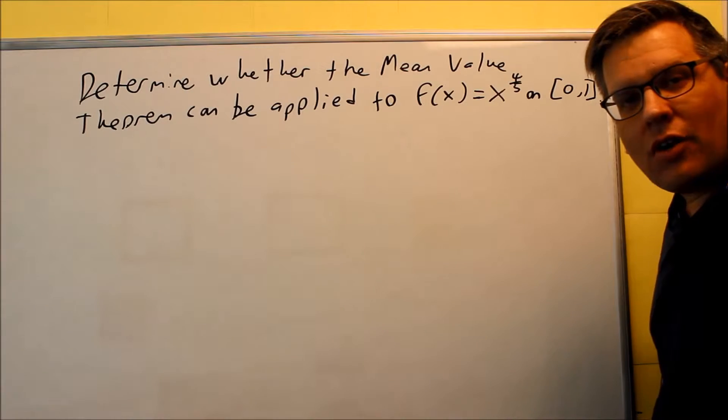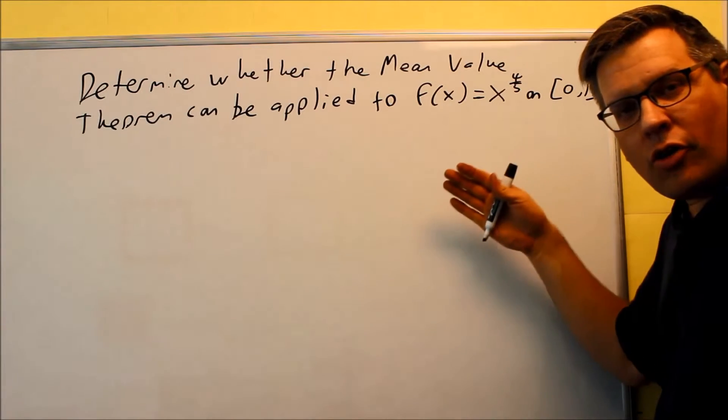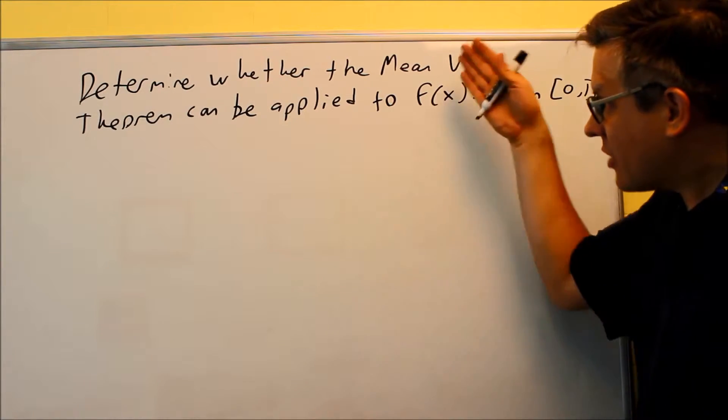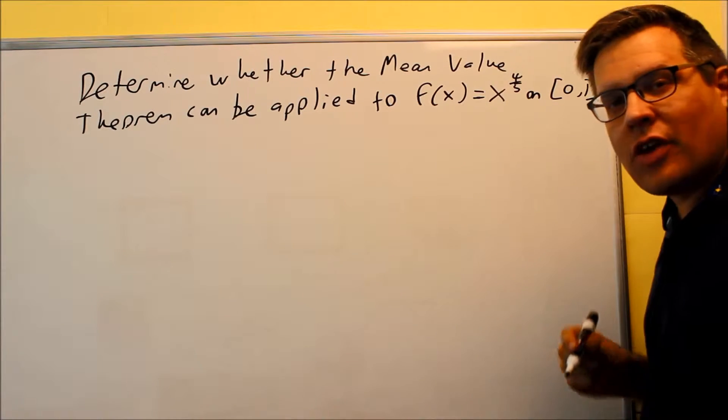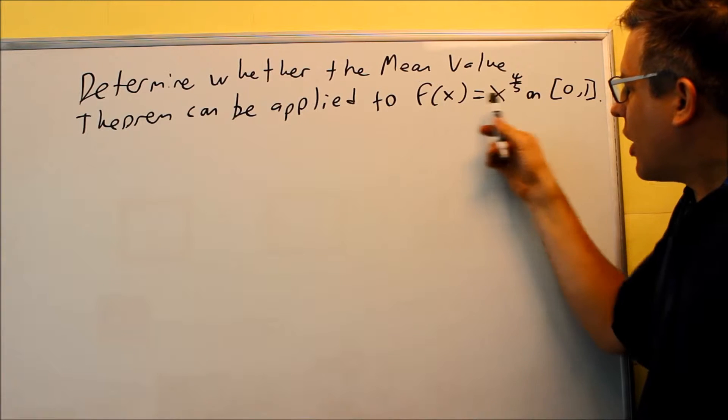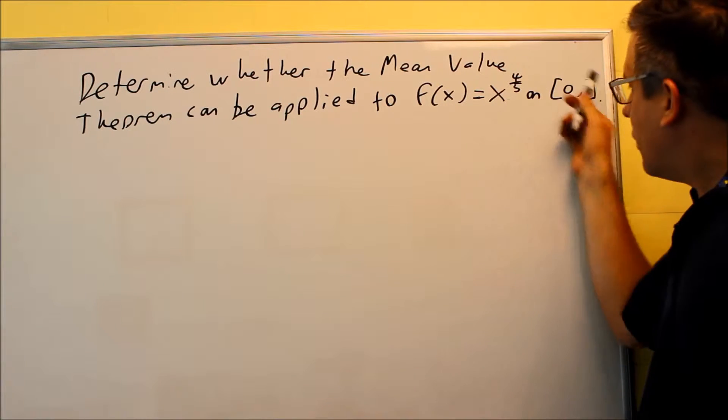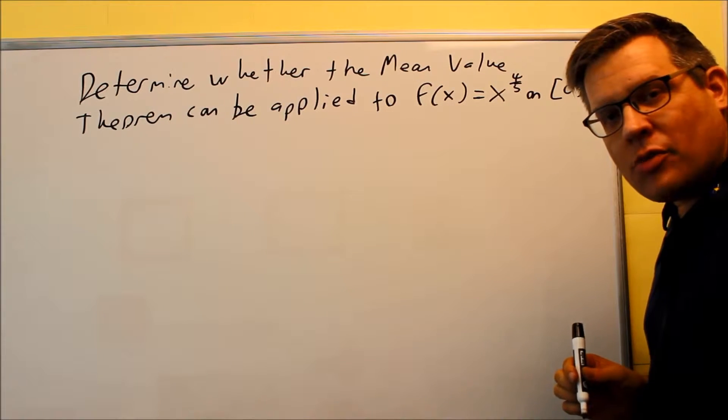So now we've taken a look at the rules for Mean Value Theorem and knowing when it can be applied, let's take a look at this example. This example, they want us to determine whether the Mean Value Theorem can be applied here. f(x) is equal to x to the 4/5 and we have our closed interval from 0 to 1.